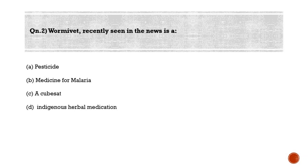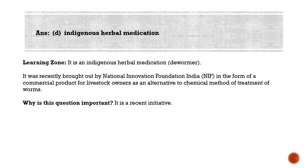Moving to the second question: 'WARM', recently seen in the news, is — option A: a pesticide, option B: a medicine for malaria, option C: a CubeSat, or option D: an indigenous herbal medication? The correct answer is option D — indigenous herbal medication. WARM is developed to treat endoparasite worms in livestock, recently brought by the National Innovation Foundation of India (NIF) as a commercial product for livestock owners, as an alternative to chemical treatment.